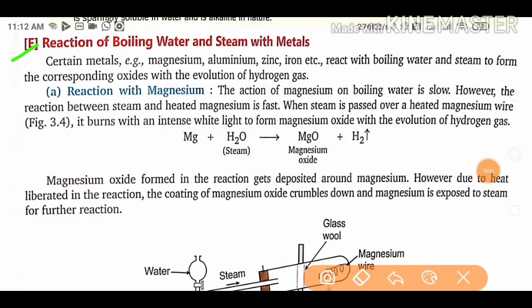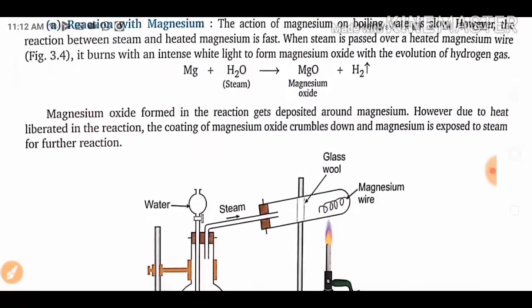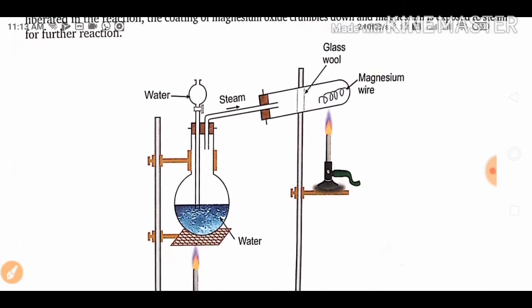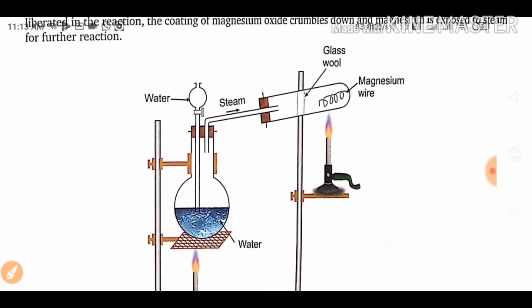Reaction of boiling water and steam with metals: certain metals — magnesium, aluminium, zinc, and iron — react with boiling water or steam to form their corresponding oxides with evolution of hydrogen gas. For magnesium, when reacted with steam, it forms magnesium oxide (MgO). The magnesium oxide deposited around the magnesium crumbles due to heat, exposing the magnesium for further reaction.